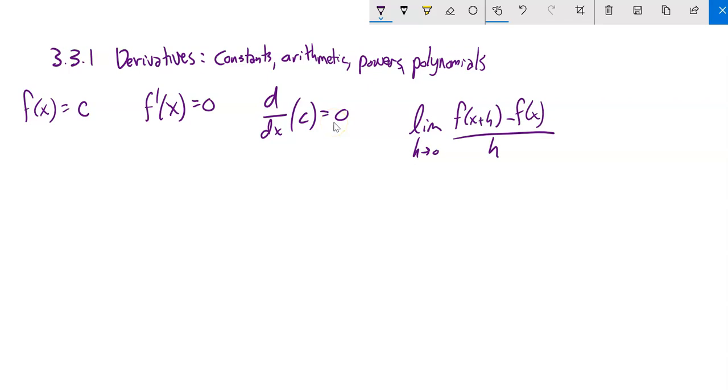It's actually pretty easy to show with that definition of limit. f of x is c, f of x plus h is also c. This thing always spits out c. c minus c is 0. 0 divided by h is 0. So the limit as h approaches 0 of 0 is 0.